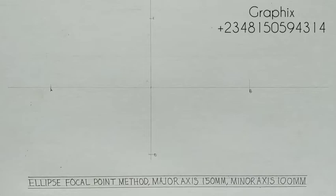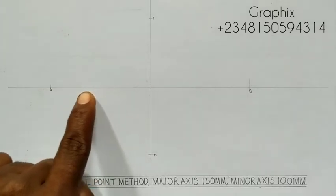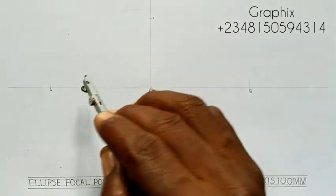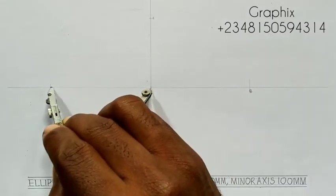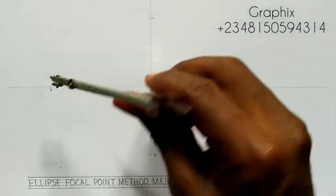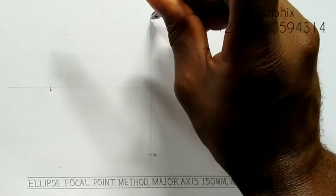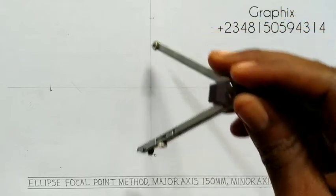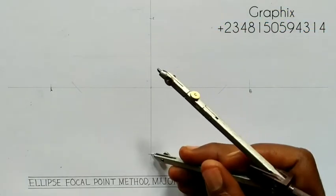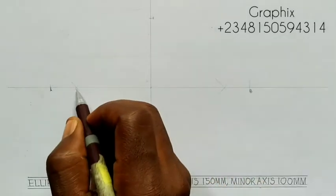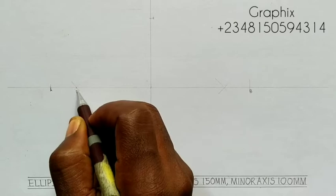The most important thing in the focal point method is finding the focal point. To get the focal point, use the radius from the center to point A, and place this radius at point C. Strike an arc this way and another arc this way. Then take it to point D and strike another arc this way and another arc this way. Where these arcs intersect is called F1.